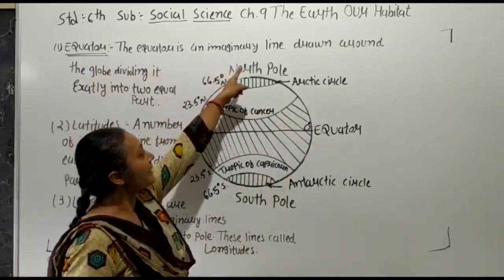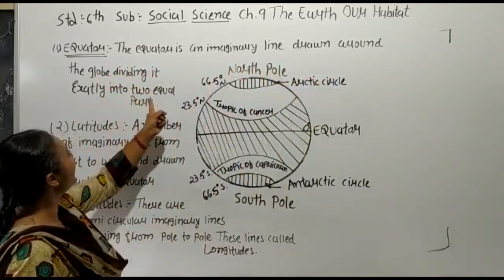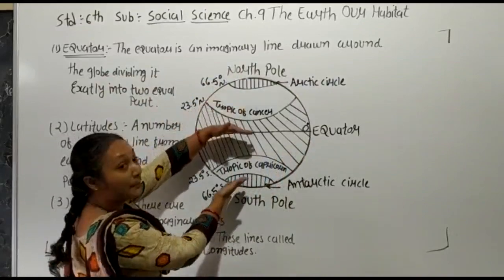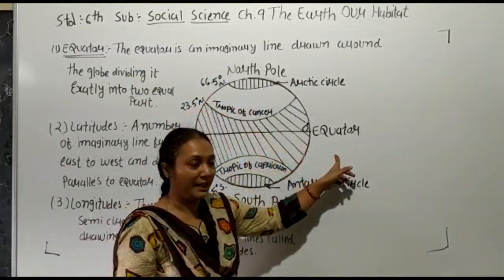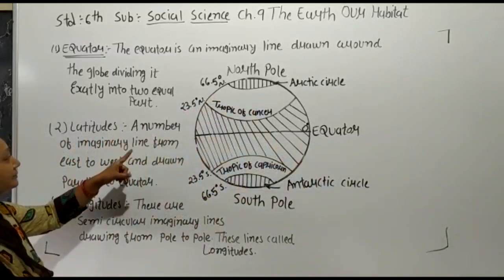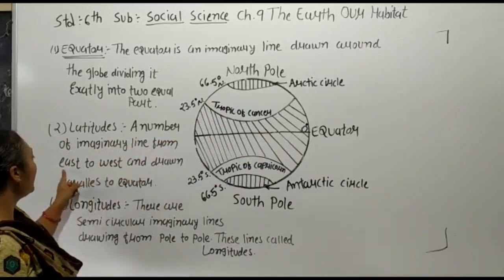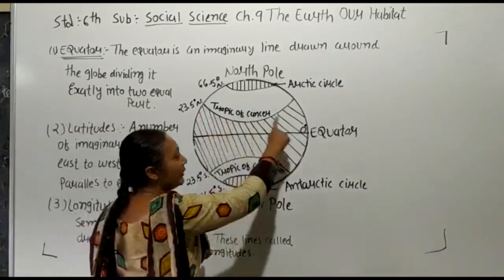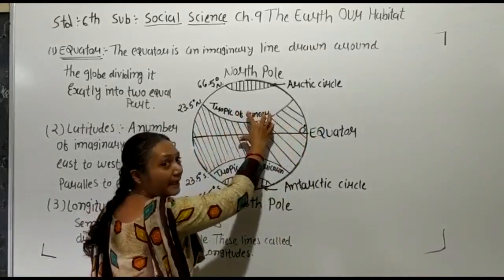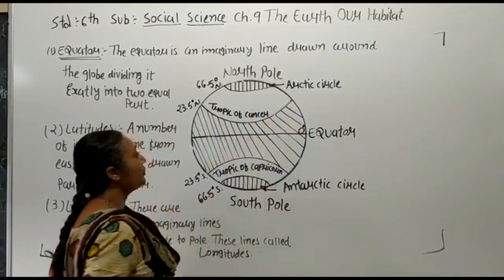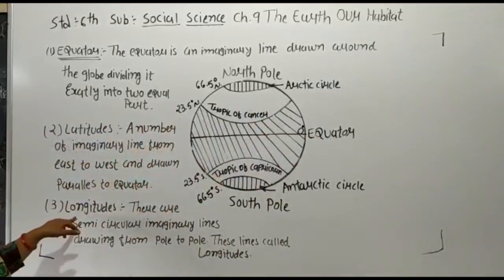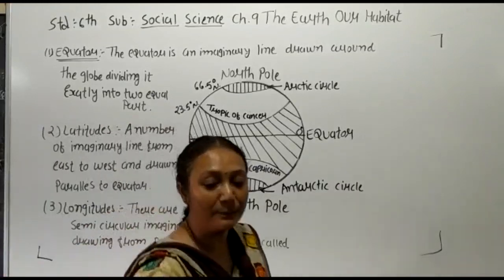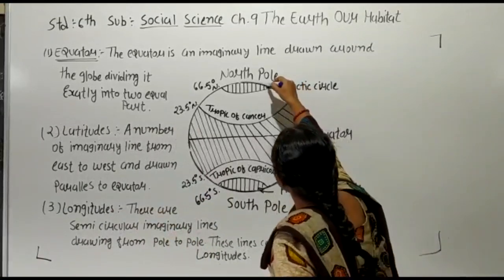The equator is an imaginary line around the globe dividing it into exactly two equal parts. Equator means making two equal parts — that is called the equator. Latitude lines are imaginary lines going from east to west, parallel to the equator, each at the same spacing. Longitude means semicircular imaginary lines drawn from pole to pole — pole to pole means going from up to down.